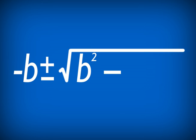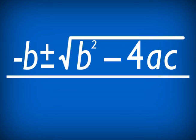The quadratic formula is negative b, plus or minus the square root of b squared minus 4ac, all over 2a.